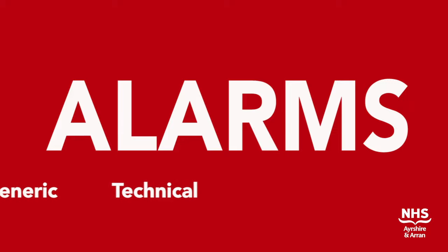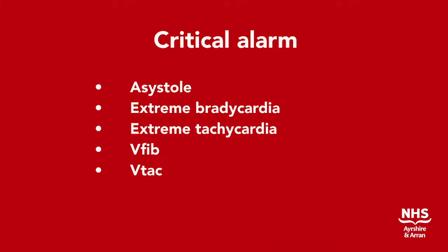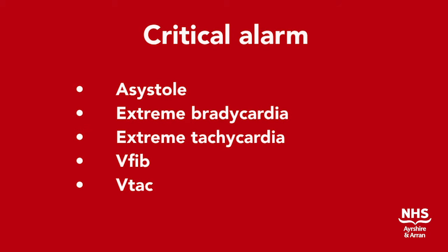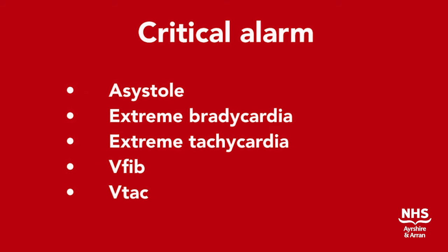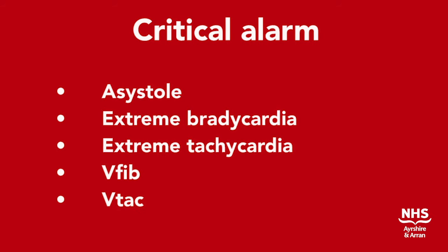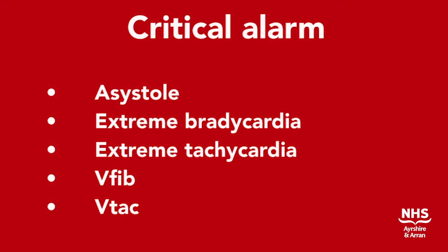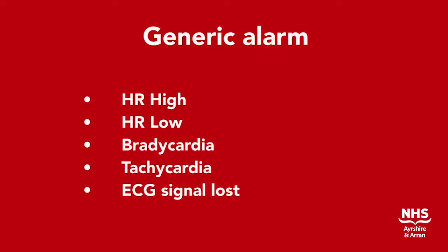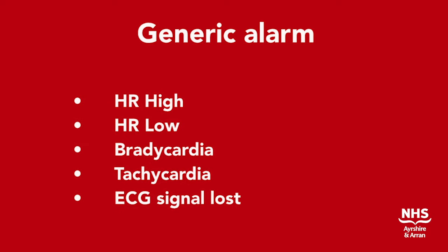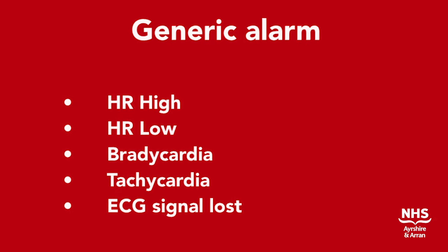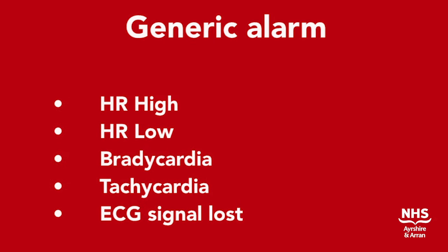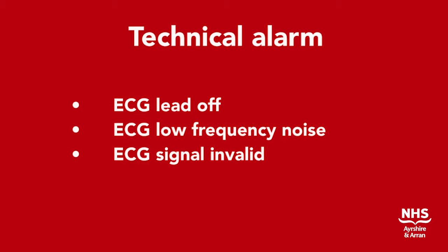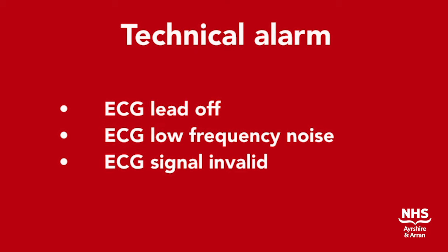Whilst the patient is on telemetry, there are several different alarms that may be encountered. Critical alarms include asystole, extreme bradycardia, extreme tachycardia, V-fib (ventricular fibrillation) or V-tach (ventricular tachycardia). Generic alarms include heart rate high, heart rate low, bradycardia, tachycardia and ECG signal lost. Some of the technical alarms include ECG lead off, ECG low frequency noise and ECG signal invalid.